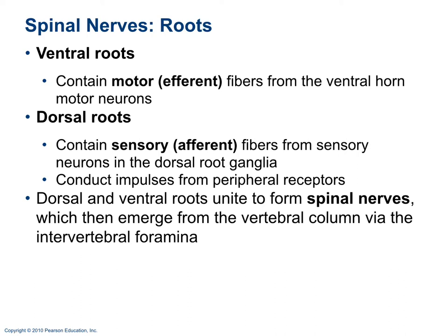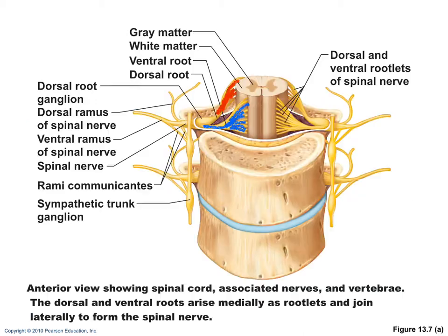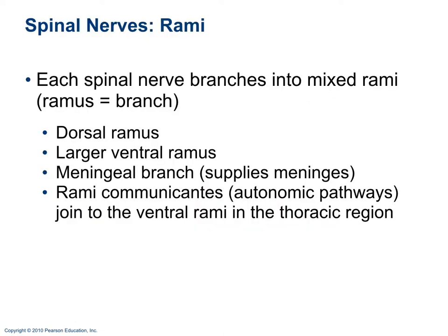Spinal nerves have ventral roots and dorsal roots. Ventral roots carry motor (efferent) fibers from the ventral horn motor neurons of the spinal cord. Dorsal roots contain sensory (afferent) fibers. Together they form a mixed spinal nerve. When the mixed spinal nerve branches, it forms rami — dorsal rami and ventral rami.